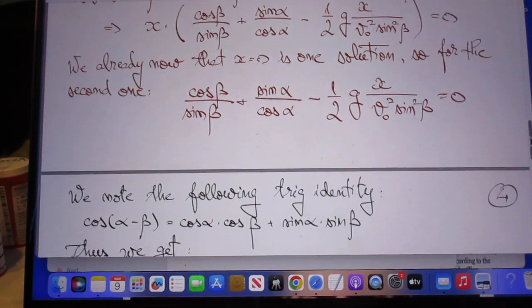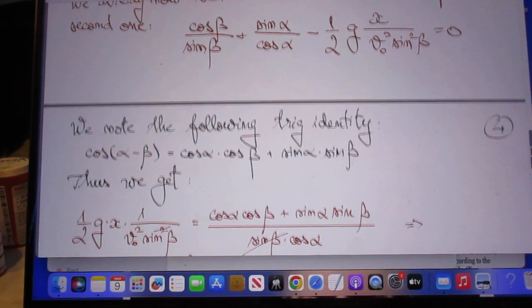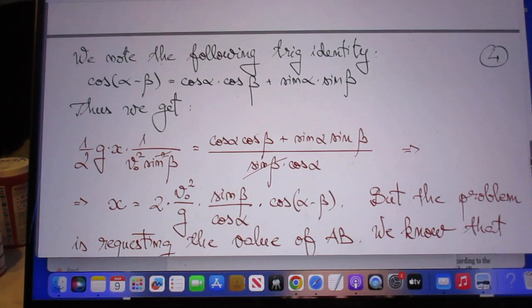He massages the trigonometry a little further, cosine alpha minus beta, and then finally he comes out with this result.